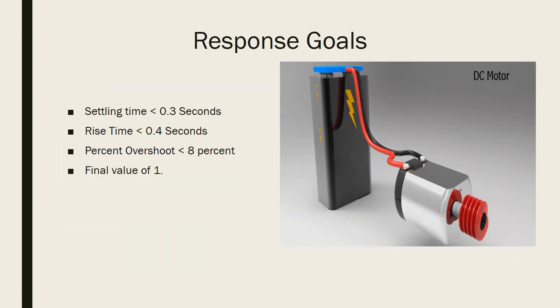To meet our response goals that I took upon myself to decide, I wish to have a settling time of less than 0.3 seconds, a rise time of less than 0.4 seconds, a percent overshoot of less than 8%, and a final value of 1 for the DC motor.